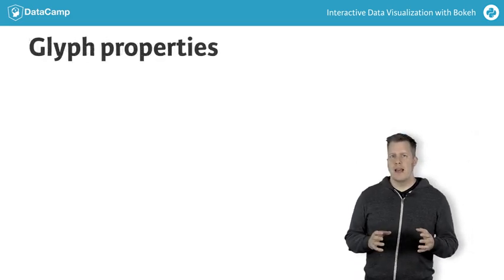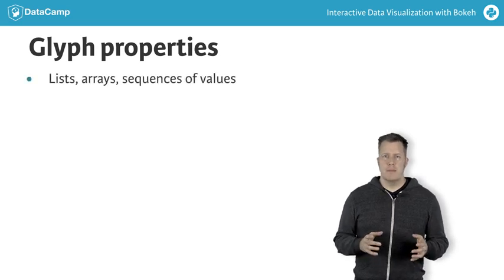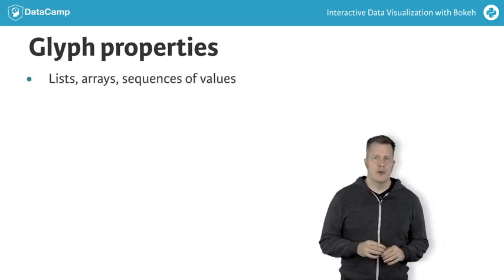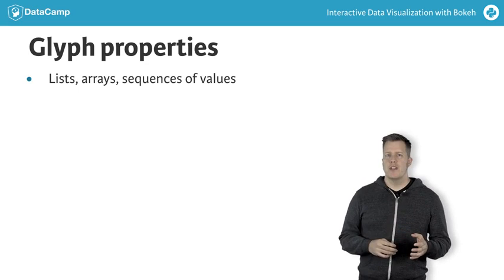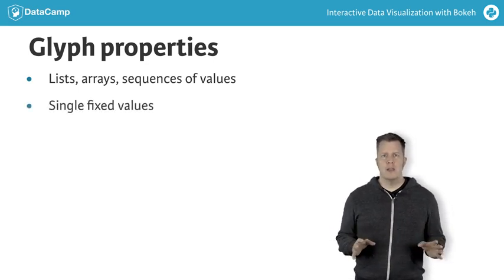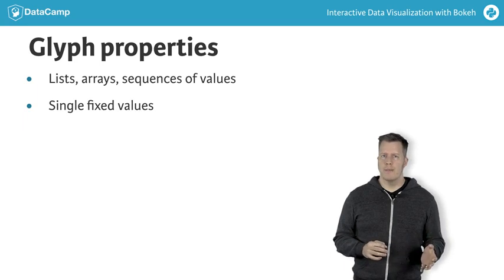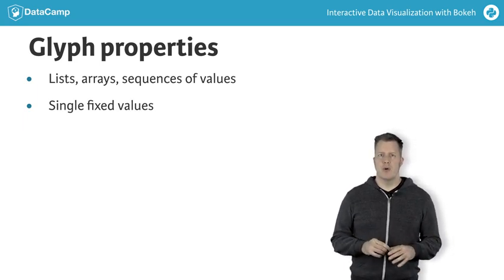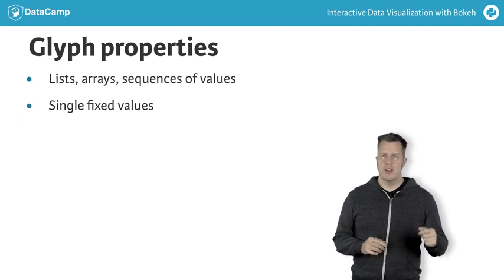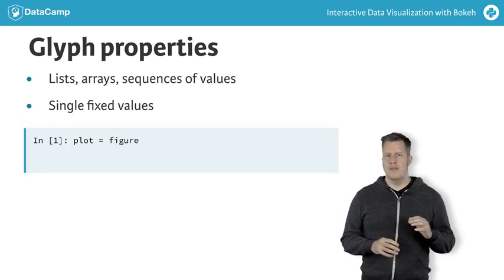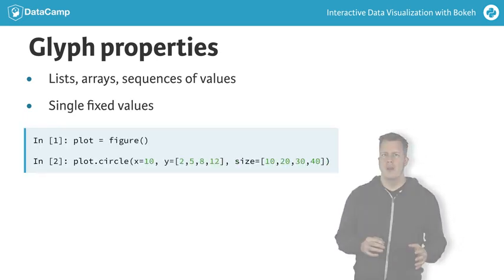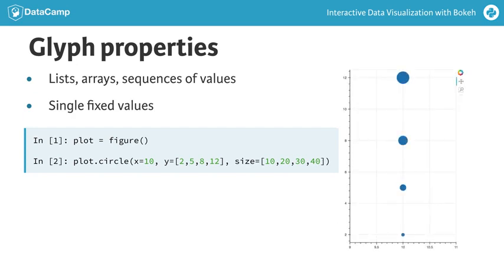What kinds of values can be attached to glyph properties? We've seen that Python lists can be passed in, but more generally, any sequence type will do — tuples, arrays, columns from pandas data frames all work well. It's also possible to configure properties with a single fixed value. In that case, however many glyphs are actually drawn, they will all have the same value for that property. This has already happened implicitly in the previous example: we supplied lists for the x and y coordinates, but the size, color, and transparency had single default values that carried over to every circle drawn. In the example code here, we've set the x value to 10 but given lists for y and for size. In the output, we can see that all the circles are centered at x equals 10, but the y values and sizes vary according to the lists that we passed in.